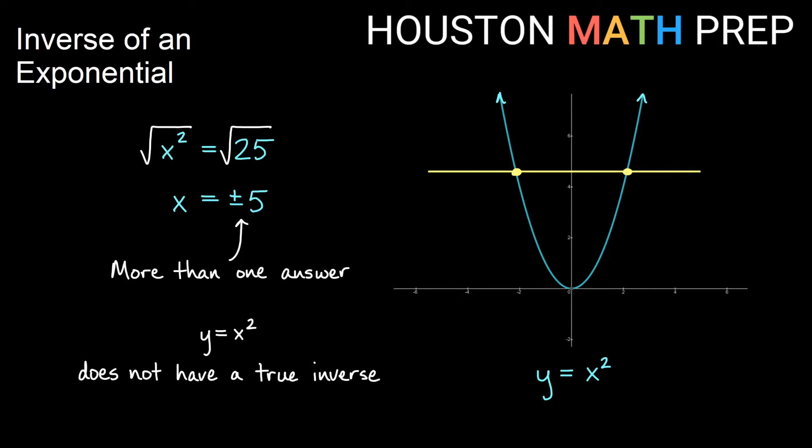it's possible that I can intersect the graph more than one time with that line, and that tells us this is not a one-to-one function and that y equals x squared does not have an inverse because it does not pass what we call the horizontal line test.